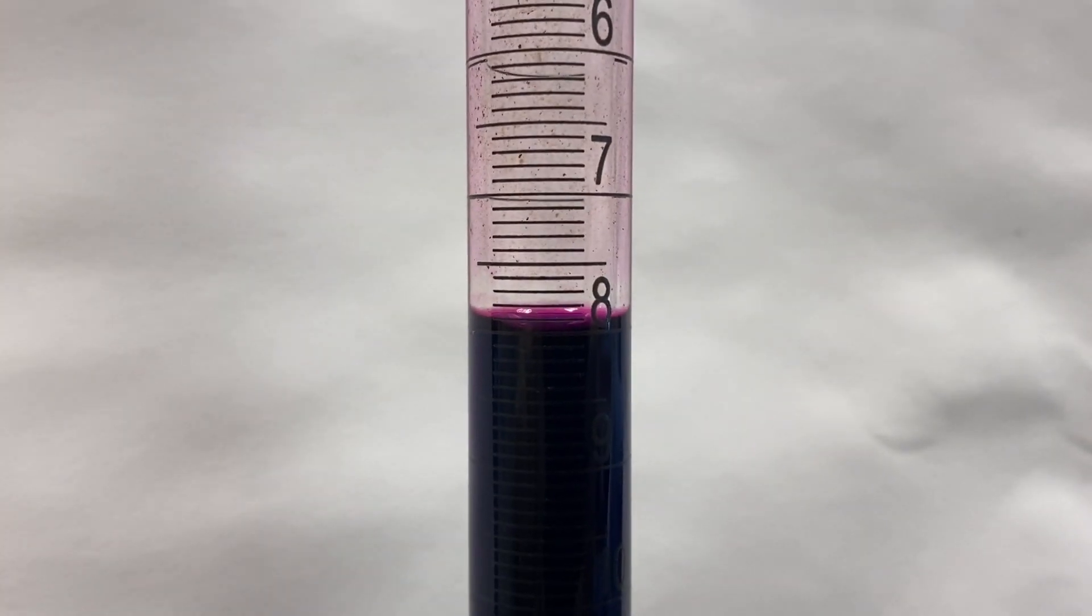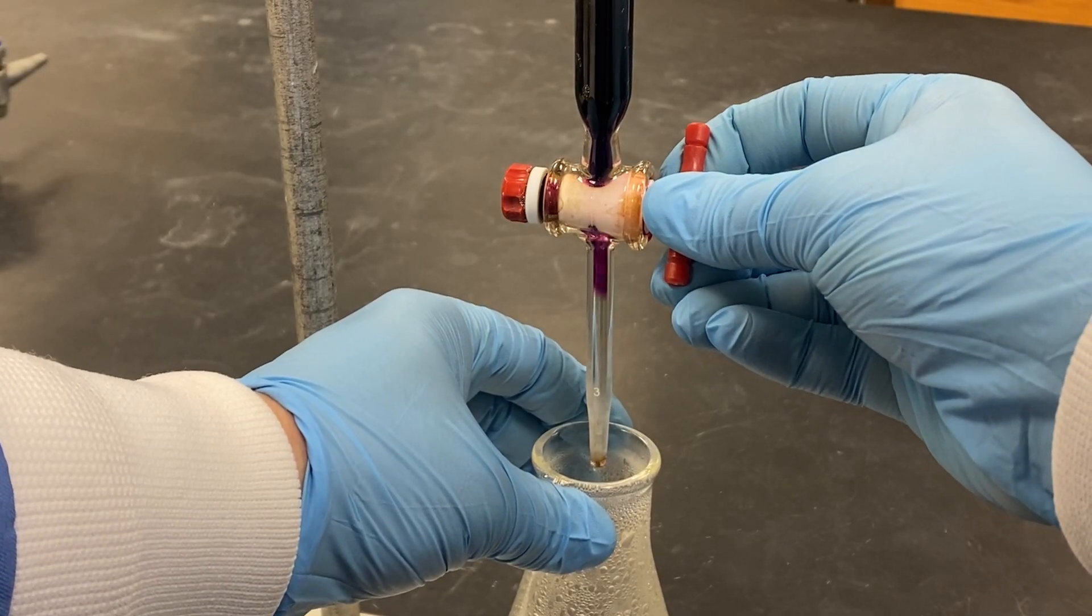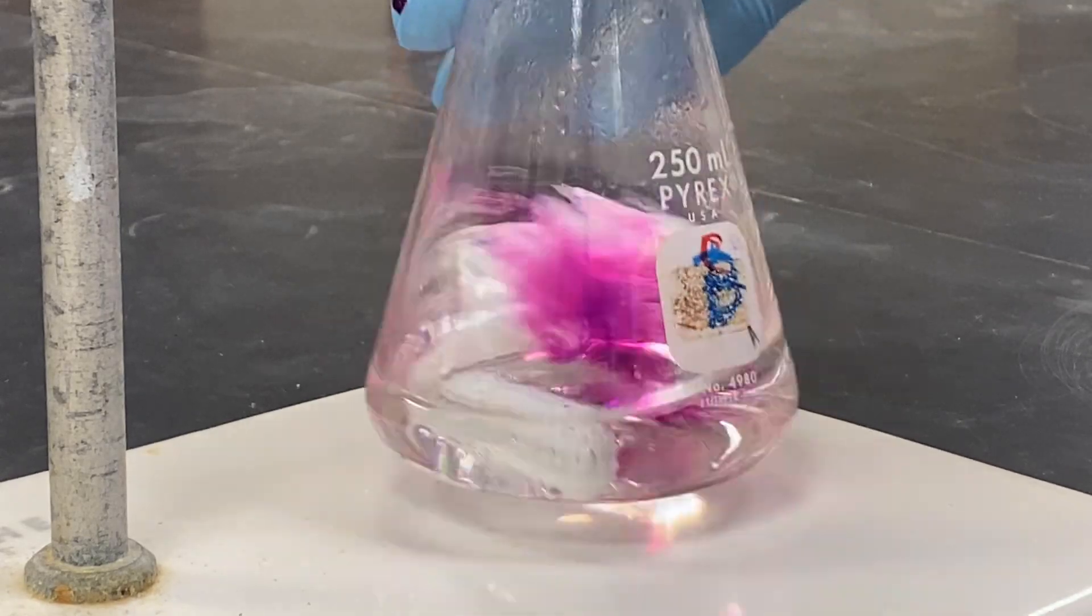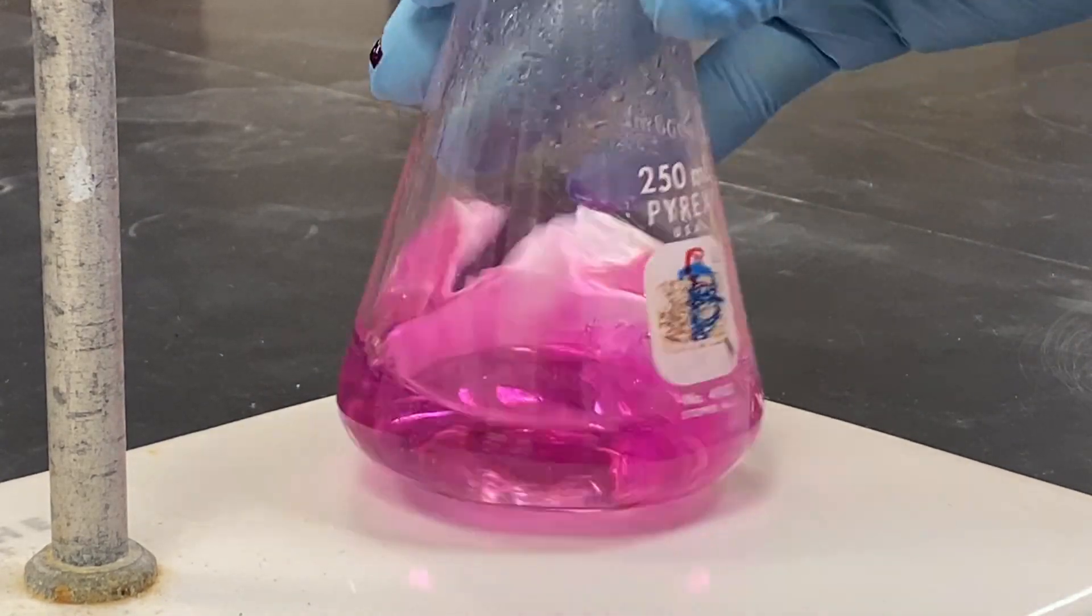After recording the initial volume, the titrant is added until the endpoint is reached. If the solution drops below 60 degrees during the titration, it should be reheated.